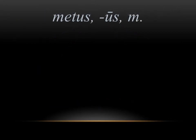The next word we have is metus, which means fear. Pay attention to the genitive here — the long us is telling us this is a fourth declension noun. This is where we get the word meticulous from. The word metus means fear, so if you're really meticulous about something, it almost means you're afraid that something might go wrong — you're really, really careful.